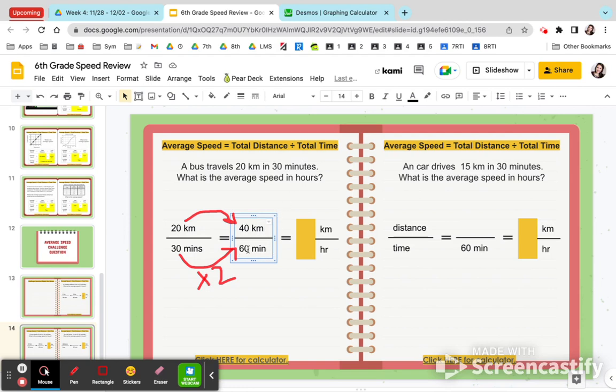Again, remember there's 60 minutes in one hour, so I know this equals one hour. So this 40 stays, and our answer is 40 kilometers an hour. So for extra credit points, see if you can do this next one. A car drives 15 kilometers.